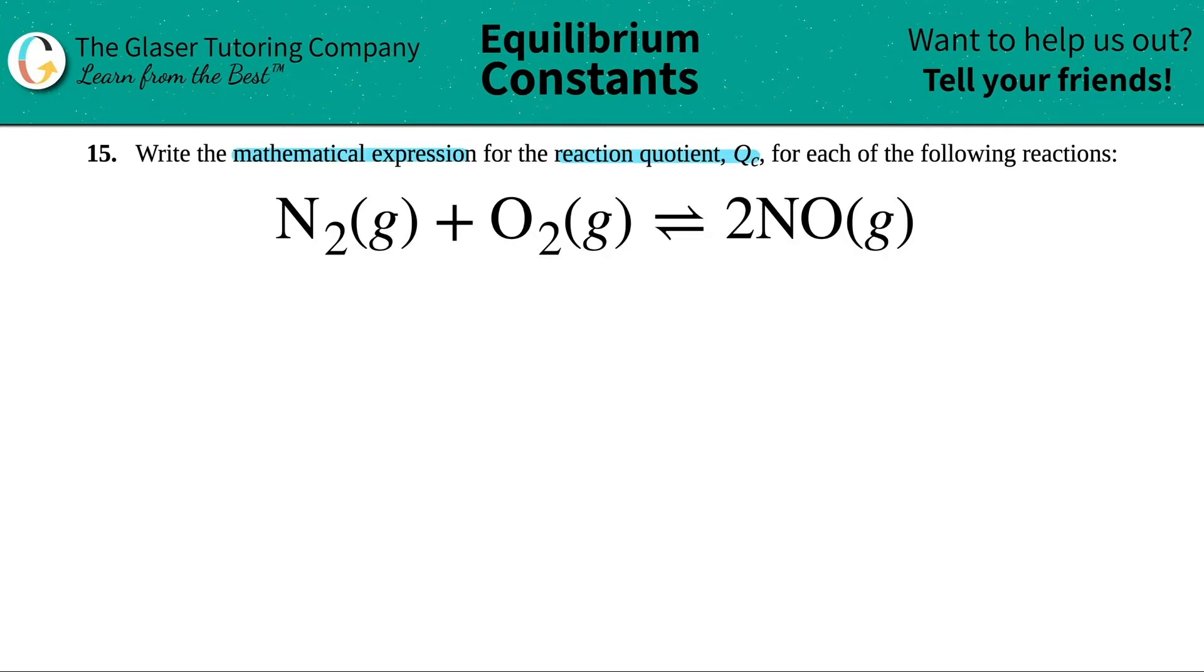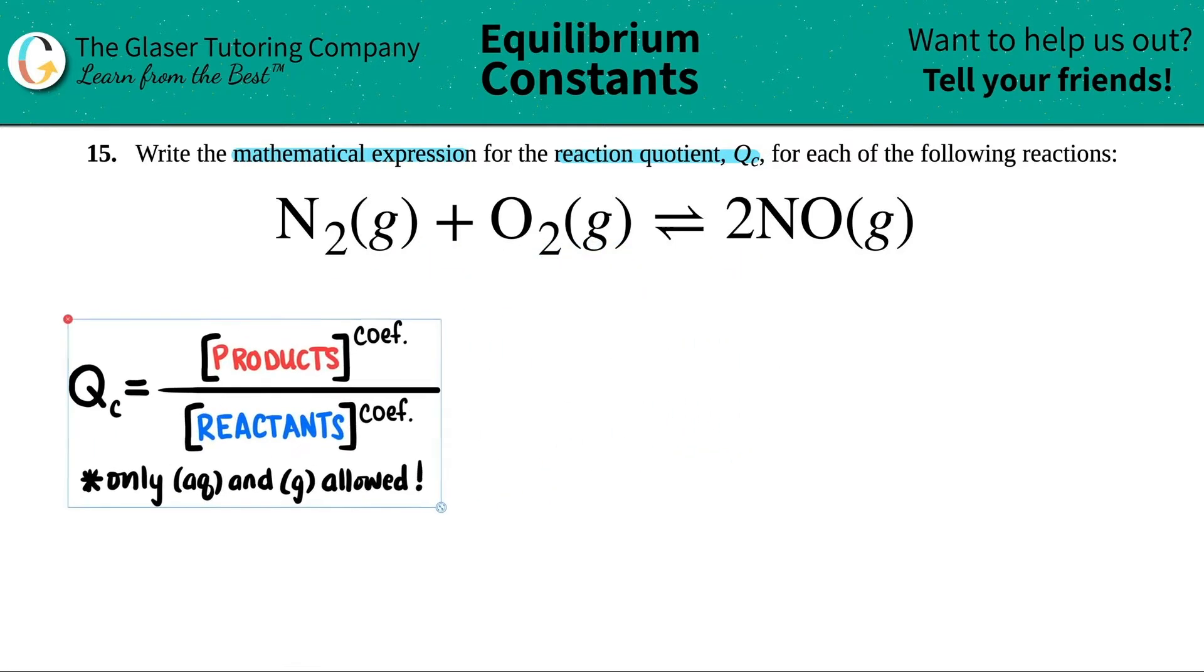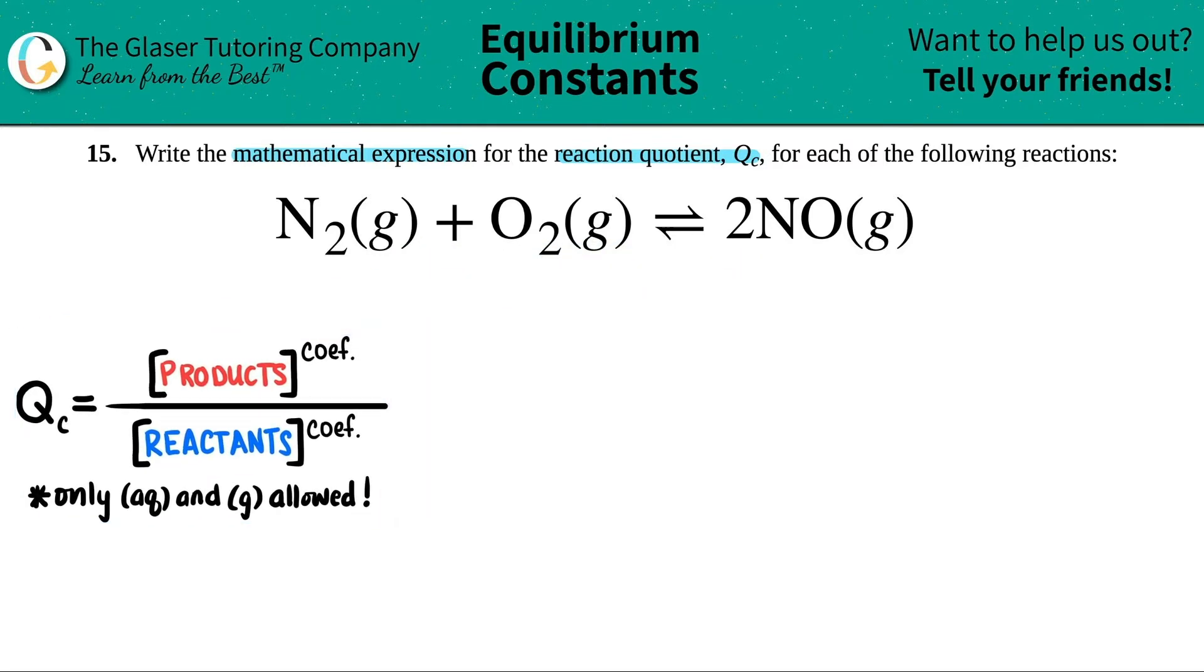All right, so finding a QC or writing the expression is a generalized formula, and it's this one over here. QC basically equals your products divided by your reactants, and each one of your products or reactants have to be raised to their coefficients.